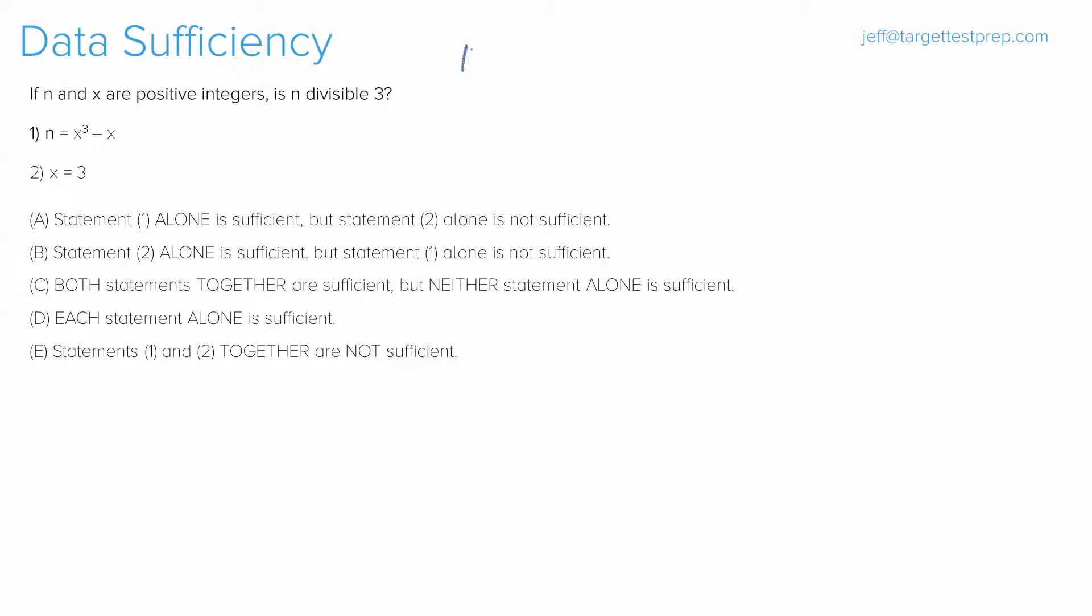I actually want to do the guessing strategy first, and then we're going to go and we're actually going to solve the question second. So, let's say we have our answer choices listed out, and we think about it from the standpoint of what is the GMAT testing. Now, this problem reads, if n and x are positive integers, is n divisible by 3? Okay, so we can at least write that out. So, is n over 3 equal an integer? Well, let's keep in mind the GMAT is not going to give us this question on a silver platter. They're not going to make it so this is guessable.